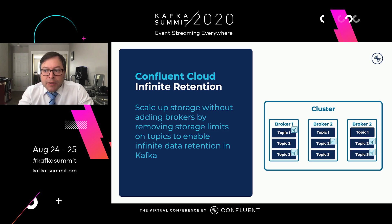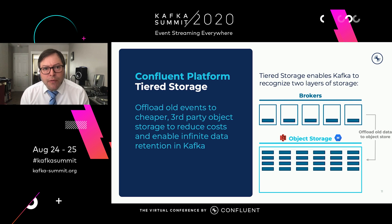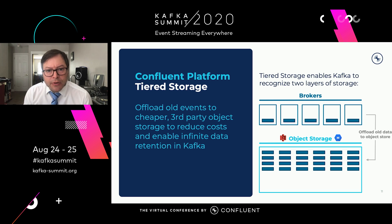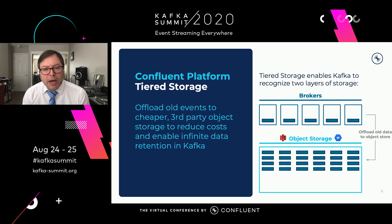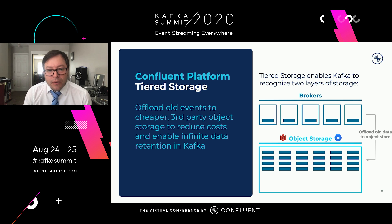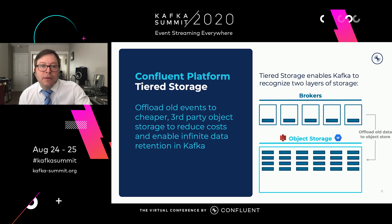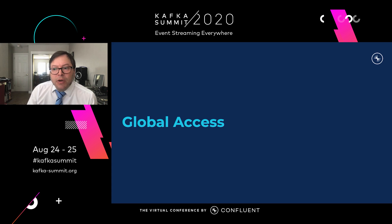There's a demo recorded by Tim that you'll probably be able to see. We've done this in our cloud, and we've also brought it to Confluent Platform with tiered storage. Tiered storage lets you offload old events to cheaper third-party object storage to reduce costs. It uses the object store of a cloud provider that you choose and enables infinite data retention in Kafka. When you combine this with self-balancing clusters, Confluent Platform is really giving you the elasticity and scalability you would normally get from a cloud-native platform — on-prem, or in whatever environment you choose to run it in. You get a very elastic experience that you can run anywhere, which brings us to our last theme of global access.